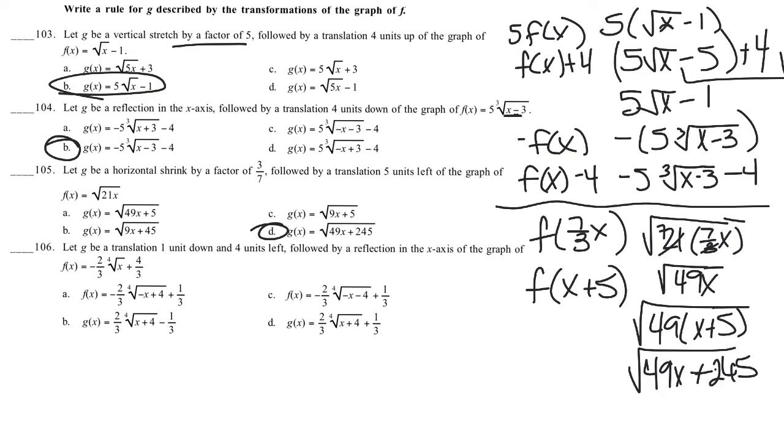Let G be a translation one unit down, so f(x) minus 1, and 4 units left, f(x) plus 4, followed by a reflection in the x-axis, negative f(x). So we write those out, and then we do them systematically. So that's negative 2/3 fourth root of x plus 4/3 minus 1.